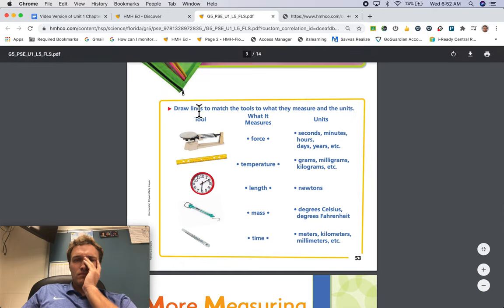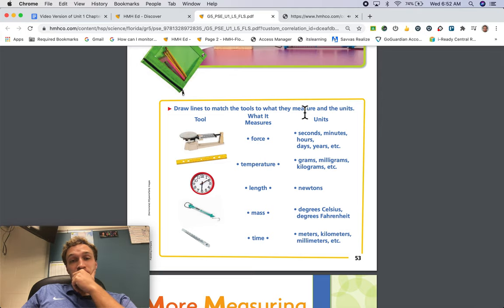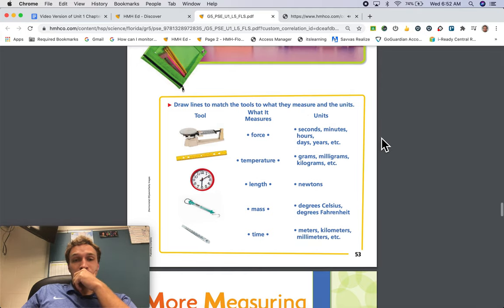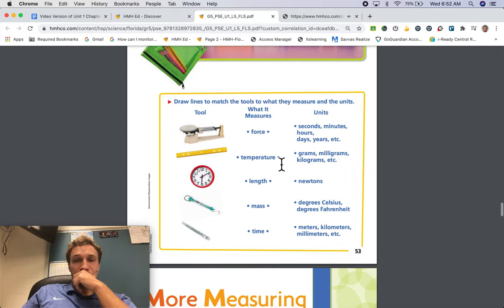Draw lines to match the tools to what they measure and the units. Tool. Balance. Ruler. Clock. Spring scale. Thermometer. What it measures. Force. Temperature. Length. Mass. Time.